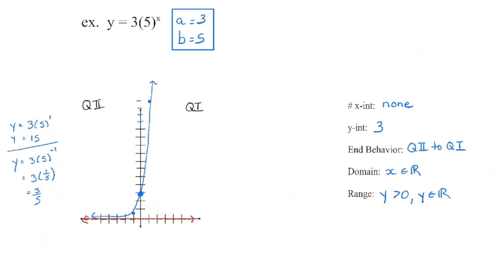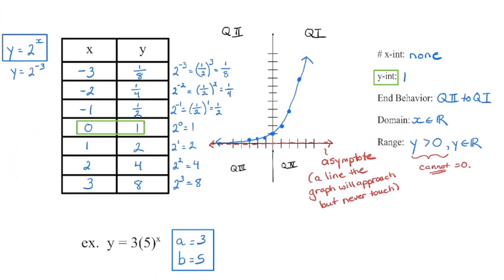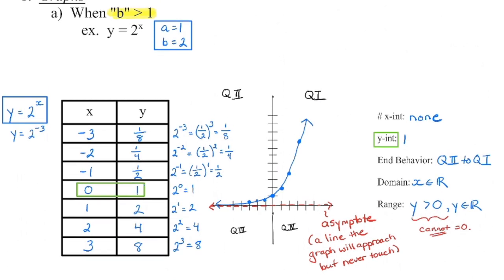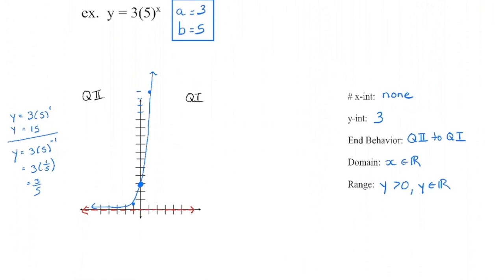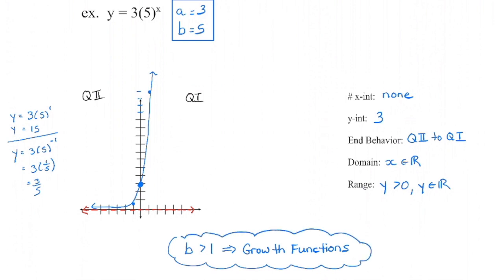We took a look at two examples. In both cases we looked at what happens when our b value is greater than 1. With b greater than 1, the graph is rising to the right in both examples. If those graphs are rising to the right, it's what we call a growth function, and it occurs when b is greater than 1. Our value for y is growing very quickly — start to think about where we'd see that in a real-world example.